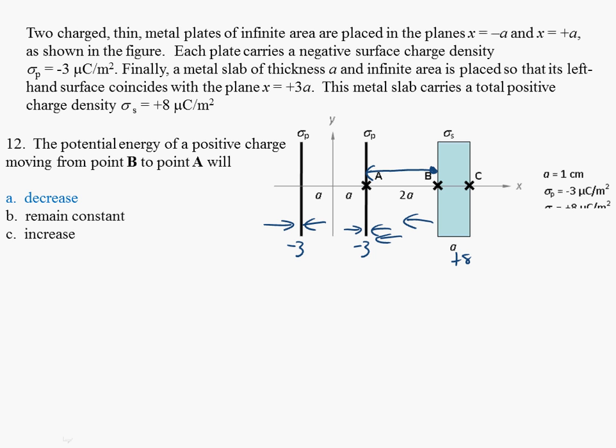So the electric field in this region between A and B is pointing to the left by all three of these. We know that means it's pointing downhill, the direction the positive charge would like to go. And so if we move a positive charge from B to A, its potential energy is going to decrease.